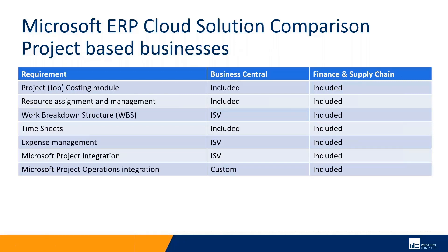Next is project-based businesses — companies delivering projects and services. Both systems have a job costing module with the ability to assign resources to a job and cost it. But when it comes to actually managing the project, Finance and Supply Chain has more capabilities: integration with Microsoft Project, the ability to pull up a plan, modify it in Project, and save it back to the application. It's also a key part of Microsoft's new Project Operations system, combining CRM projects with financials — Microsoft's future state for larger projects and services companies. Business Central has great ISVs for delivering this for smaller to mid-size project-based companies.